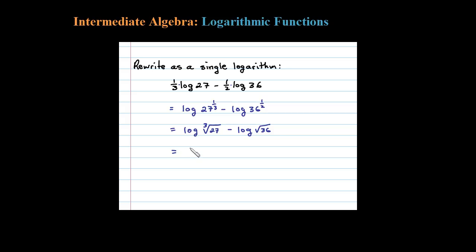So let's continue before we apply another property of the log. The cube root of 27 is just 3 because 3 cubed is 27, so that's just the log of 3 minus the log of 6.